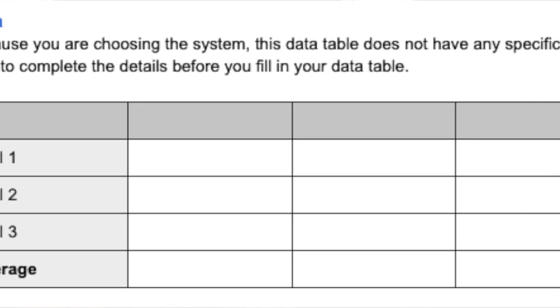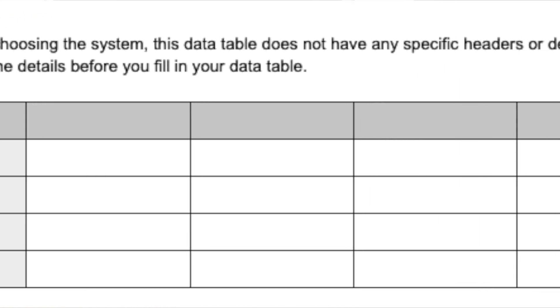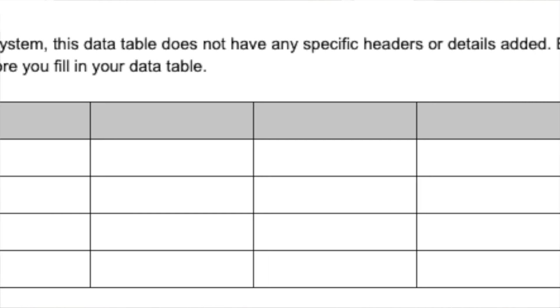Once you've chosen which system you're going to do, you conduct the experiment, fill in the data table, graph the data, and answer the question for that system. Because each of us might be doing a different system, the lab report is a little blanker than you're used to — you're going to have to figure out how to fill in the titles and headers of the data table and the graph yourself. But at this point you should be able to do that, just comparing it to the other labs you've done in the past.